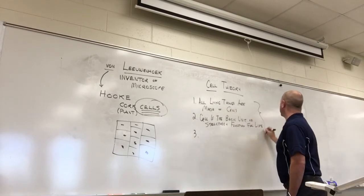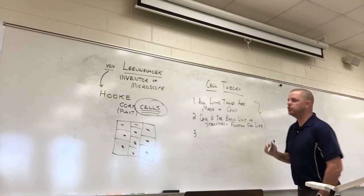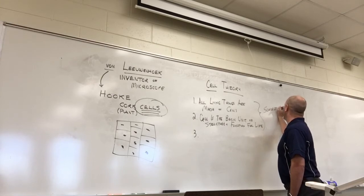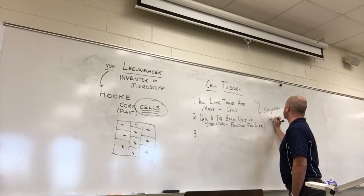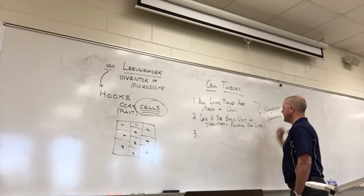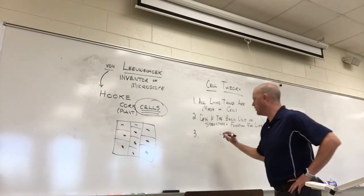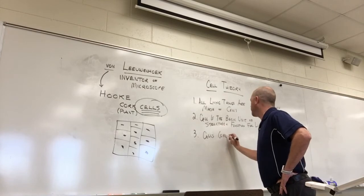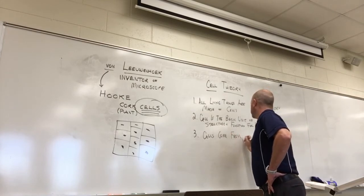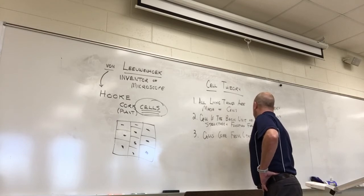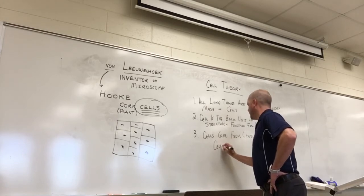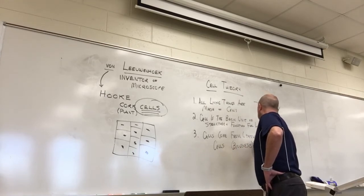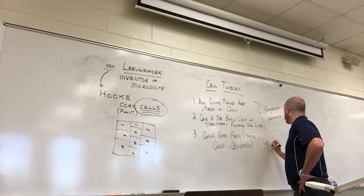The first two parts of cell theory were derived by two individuals: Schleiden and Schwann. The third part is that cells come from other cells - we give this a name called biogenesis.